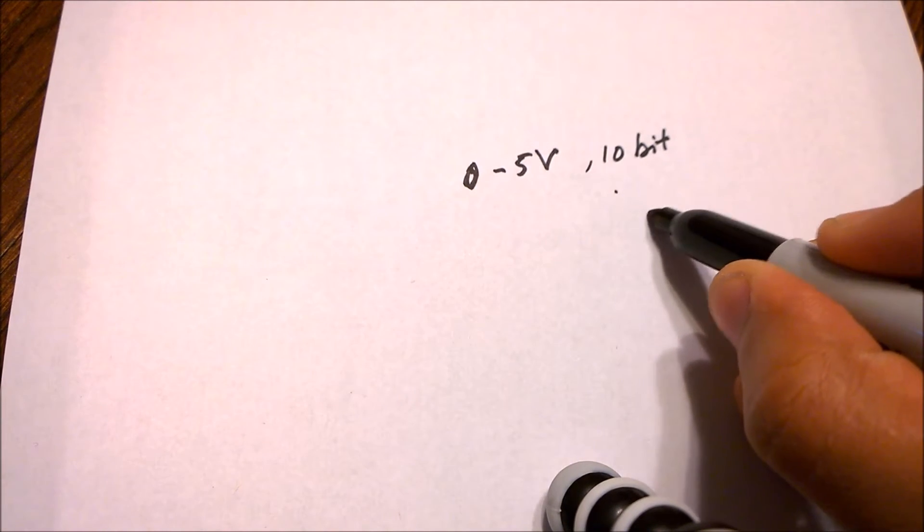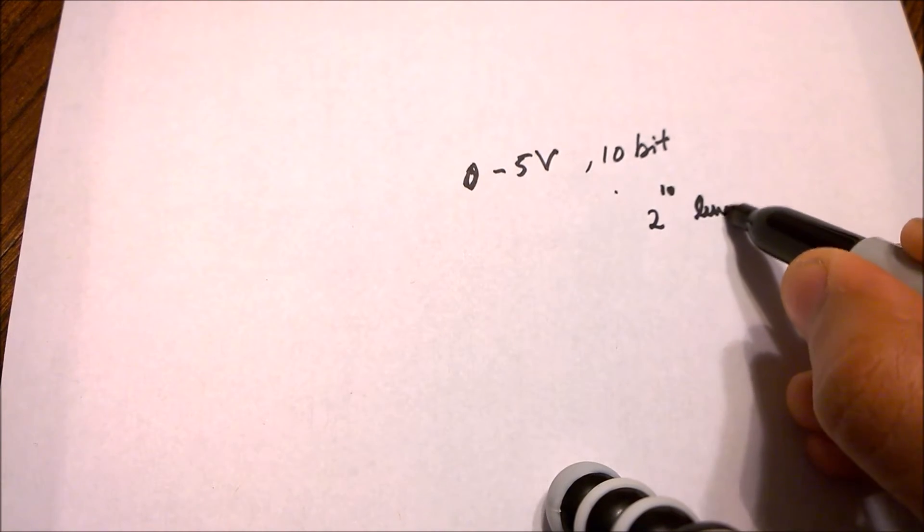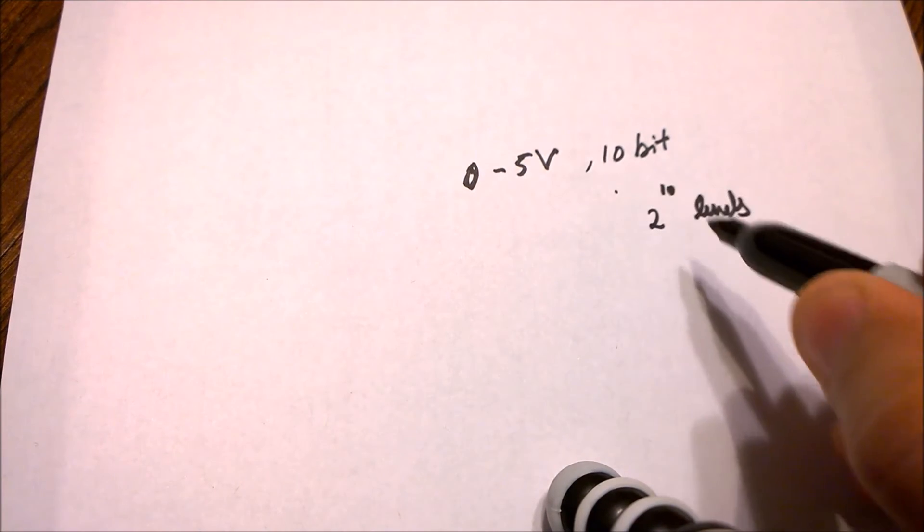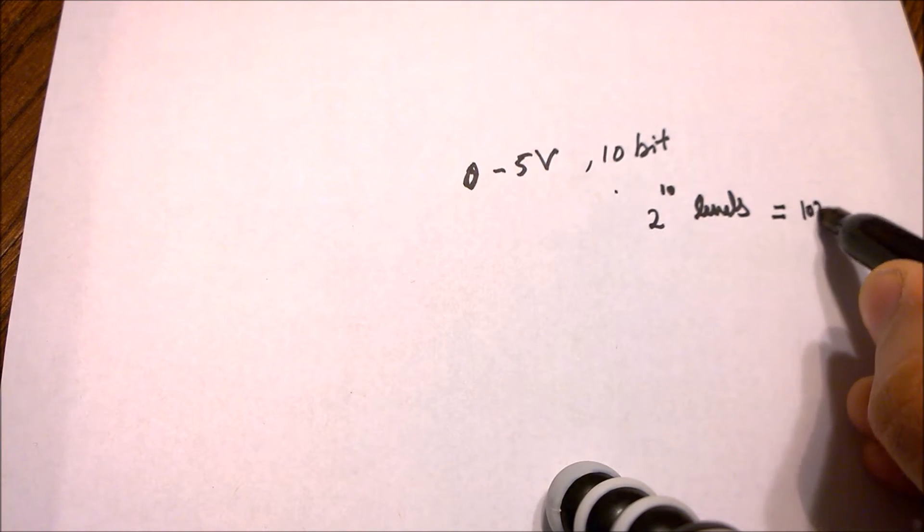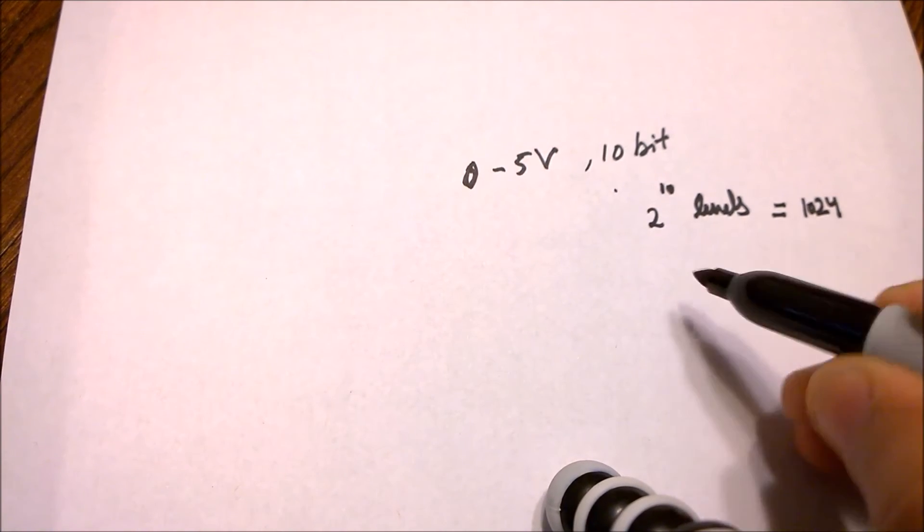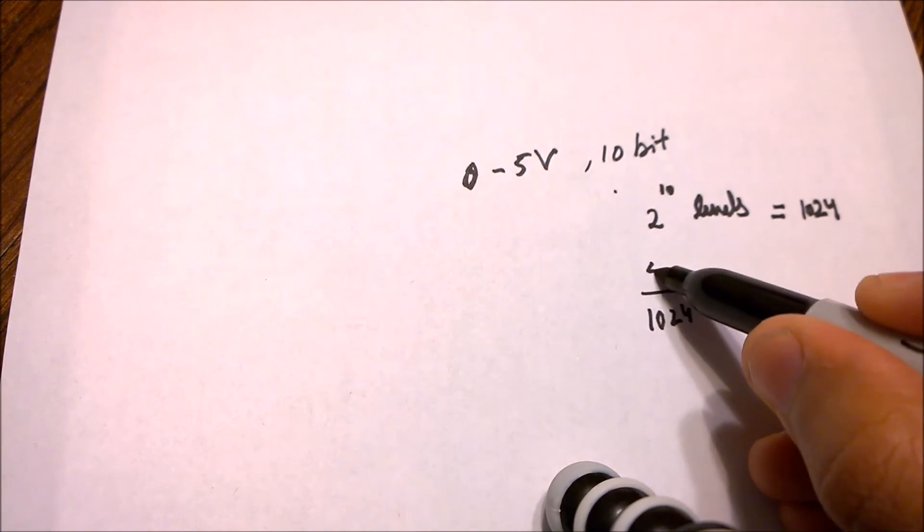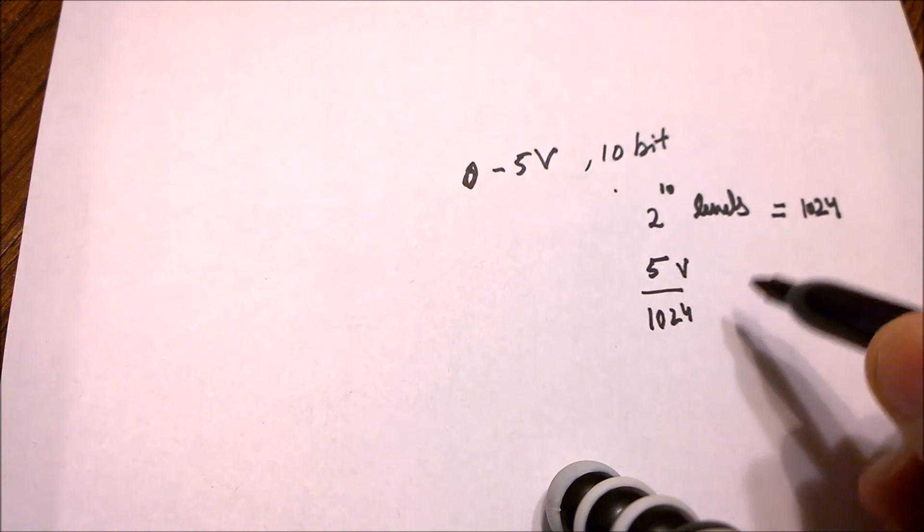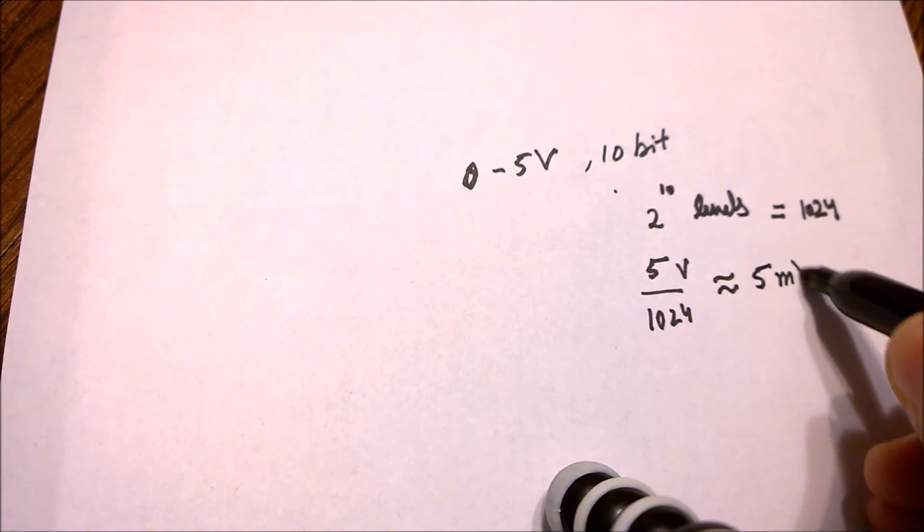2 raised to 10 is equal to 1024, so 1024 levels are divided across 5 volt. This gives us a resolution of nearly 5 millivolts per bit.